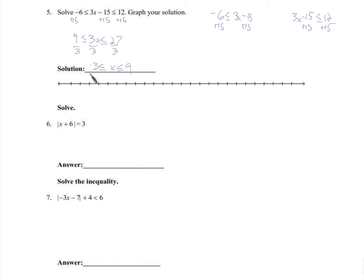x needs to be bigger than or equal to 3, but it also needs to be less than or equal to 9. So on the number line: 0, 3, 9. It can be equal to 3 or 9, or anything between — not outside that range.